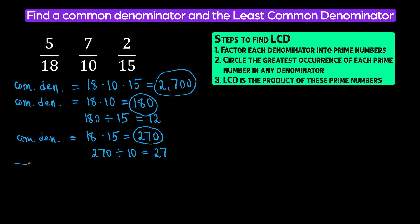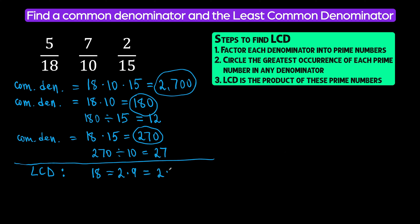Now let's find the least common denominator. To do that, we are going to break down each denominator into prime numbers. We have eighteen — we can write it as two times nine. Two is a prime number, nine is not. We can write nine as three times three. So eighteen is written as a product of prime numbers. Ten we can write as two times five — both prime numbers. Fifteen we can write as three times five. So we wrote our denominators as products of prime numbers.